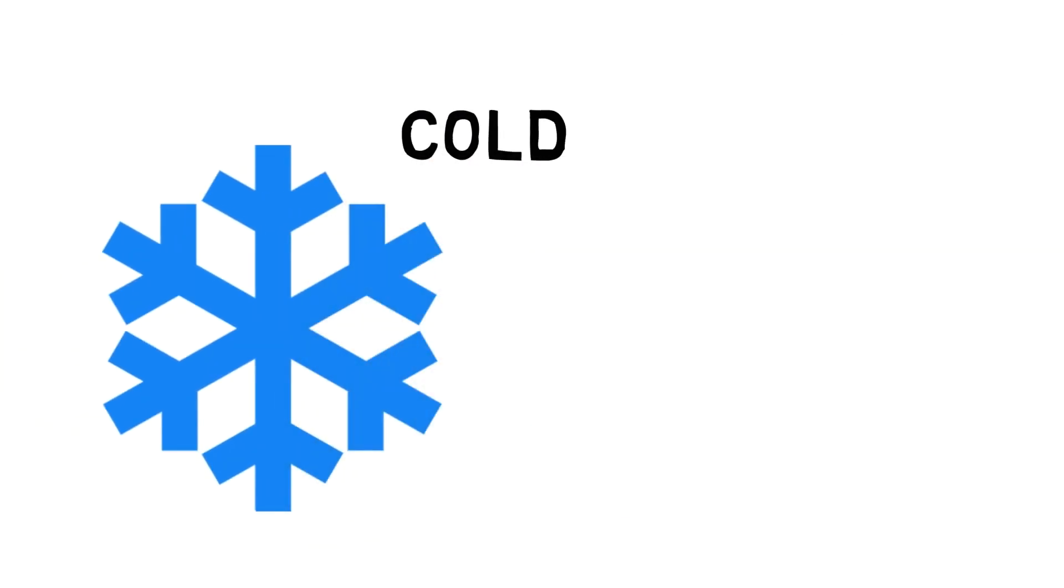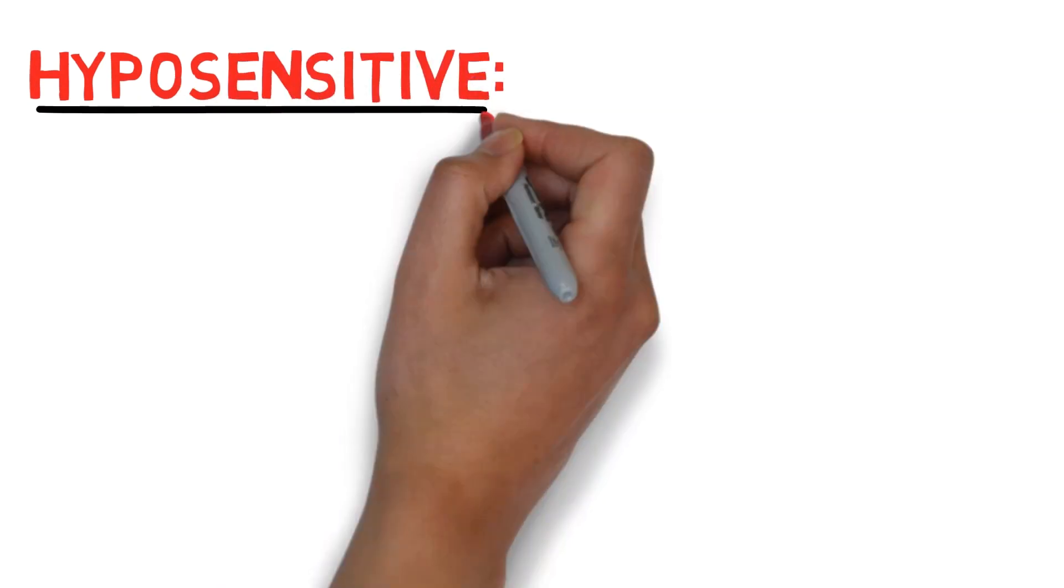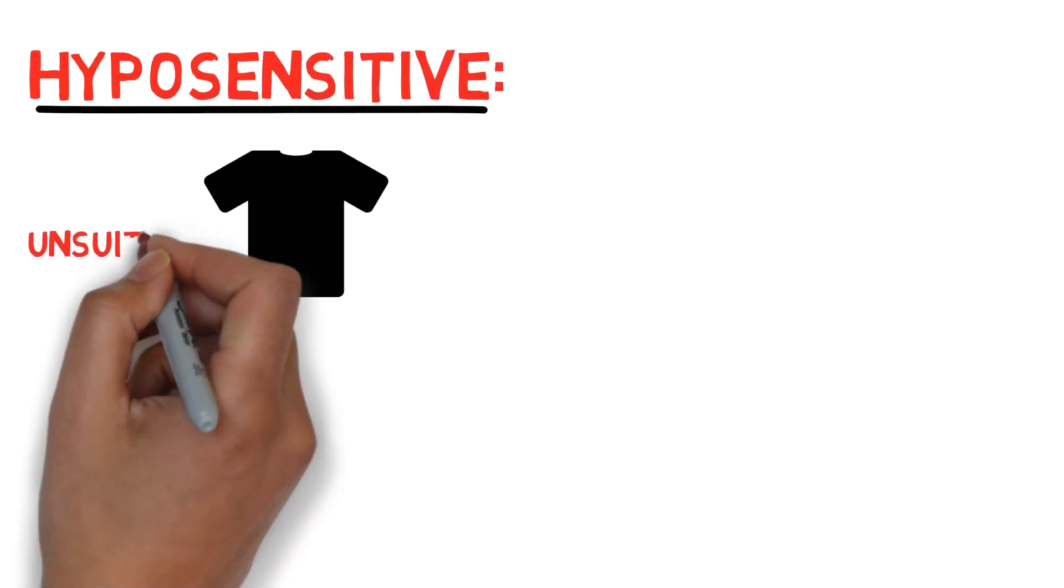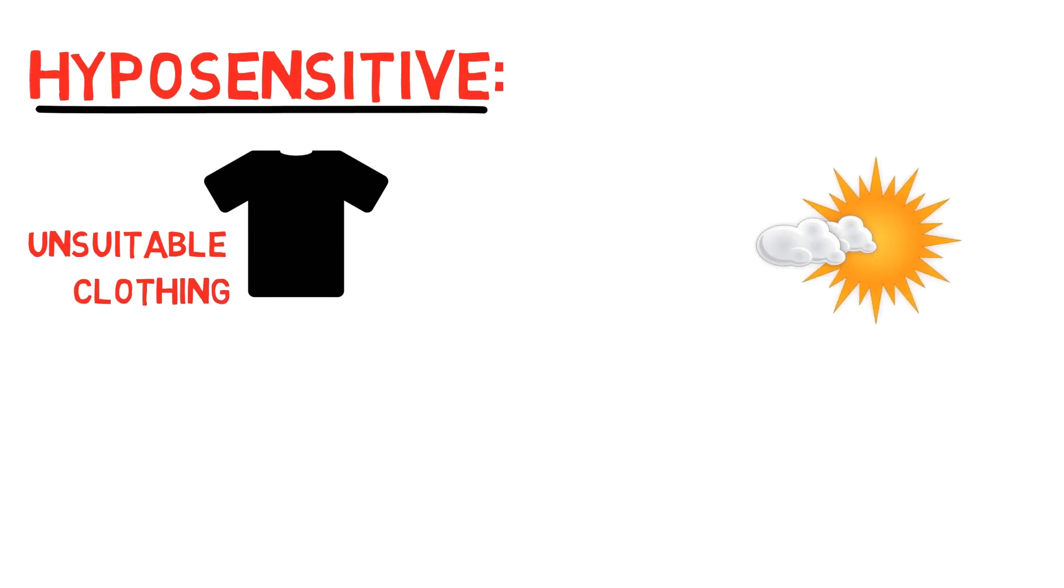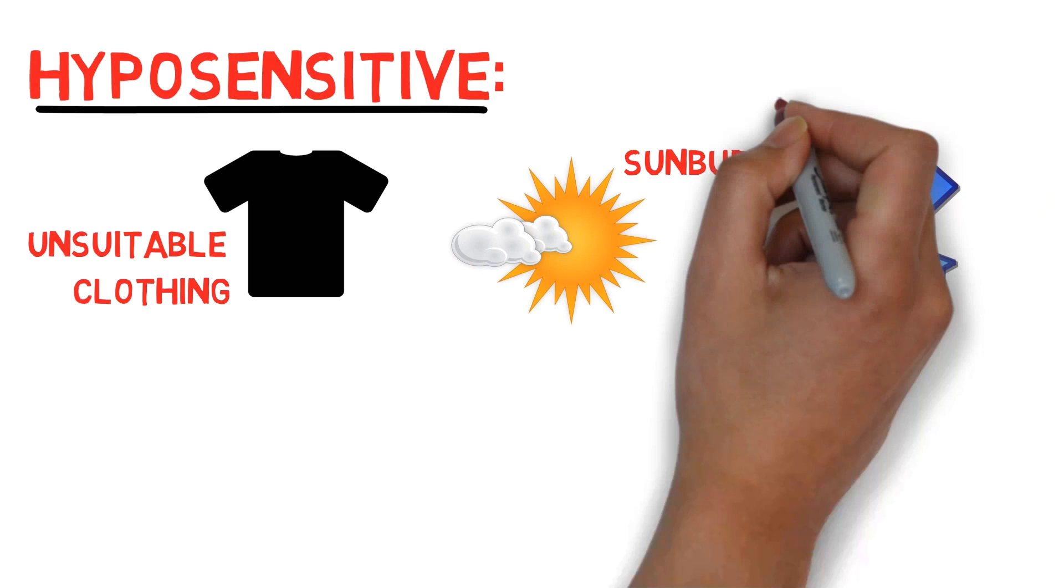If you're under-sensitive to it, you might not feel the cold or the heat. This can mean you don't wear enough clothes in winter or wear too many in summer. It can mean you forget sunscreen as you're not aware your skin is burning or warm, or that your limbs go blue from the cold.